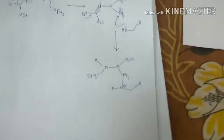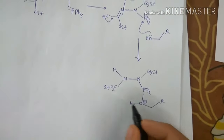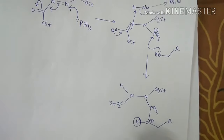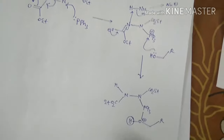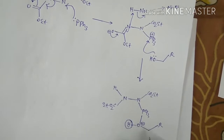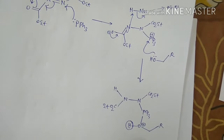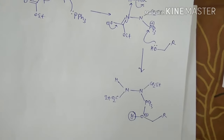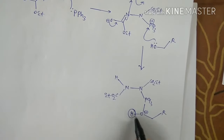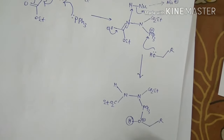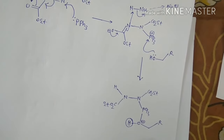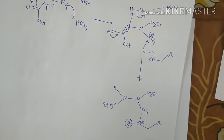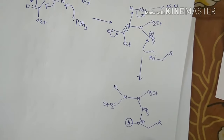This generates the NU minus anion, and here it is forming like CO2Et. Now this proton can be again deprotonated. By another molecule — any negatively charged ion source can do this deprotonation — so we can represent it like this.